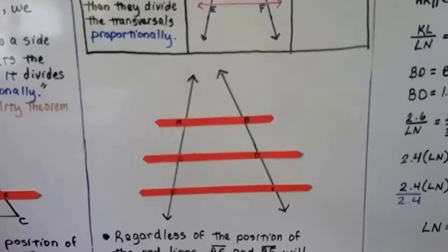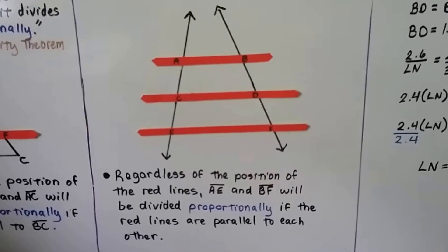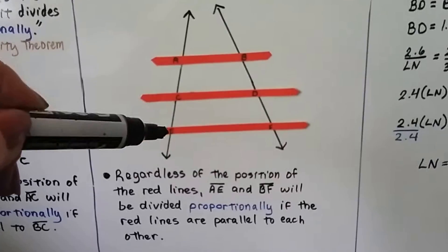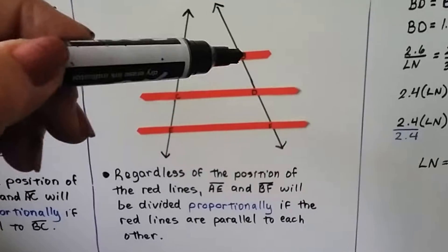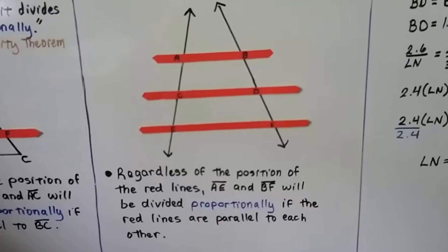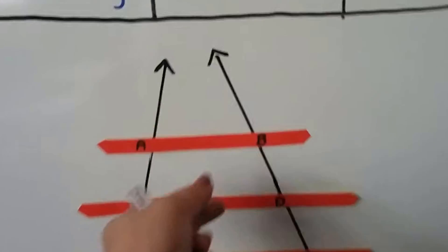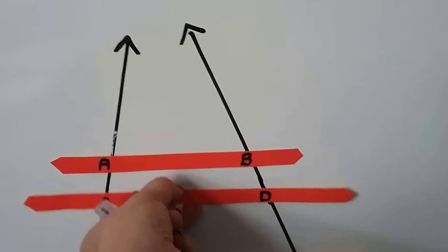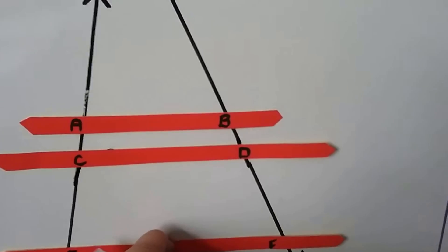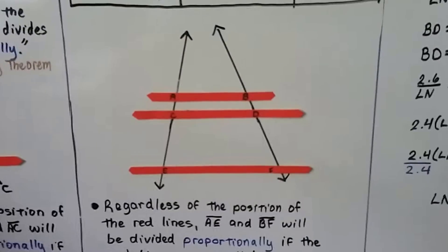So here we have two black transversals, and regardless of the position of the red lines, from A to E and B to F will be divided proportionally if the red lines are parallel to each other. So I can move these around and change their position, and as long as they're parallel to each other, they're still going to be proportional.